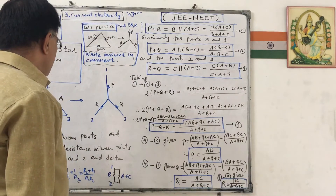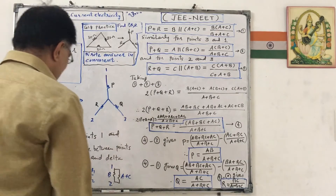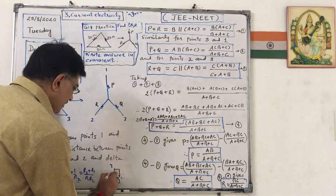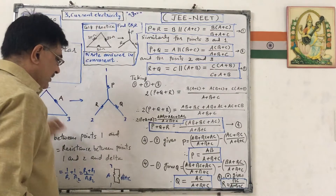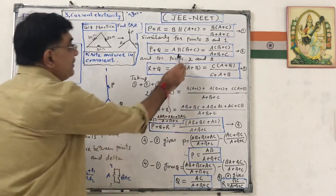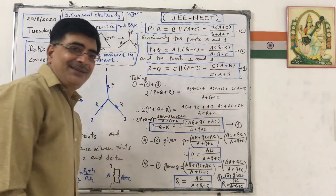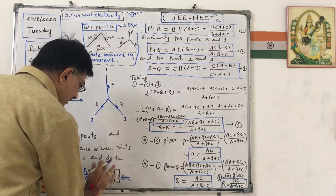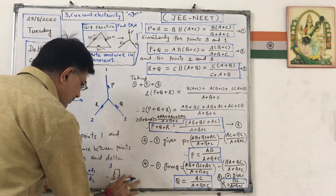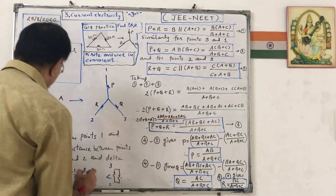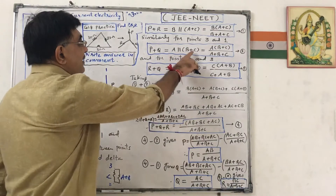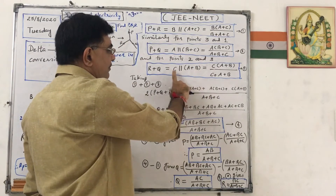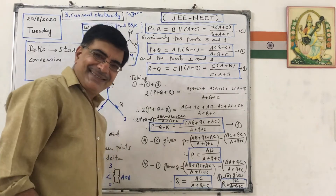For points 3 and 1: between 3 and 1 in the delta, A is in parallel to (B plus C), so the resistance equals A into (B plus C) upon (A plus B plus C). For points 2 and 3: C is in parallel to (A plus B), so the resistance equals C into (A plus B) upon (C plus A plus B), and between 2 and 3 in the star it is R plus Q series combination.